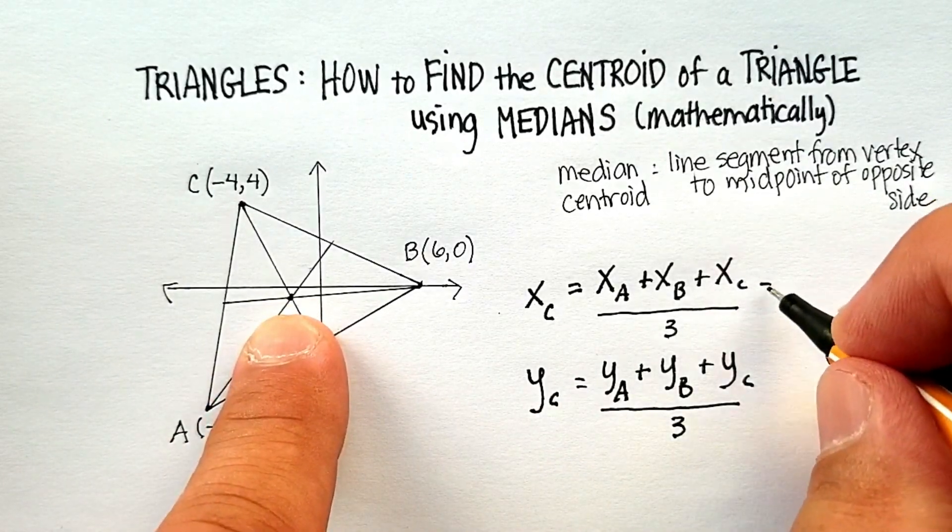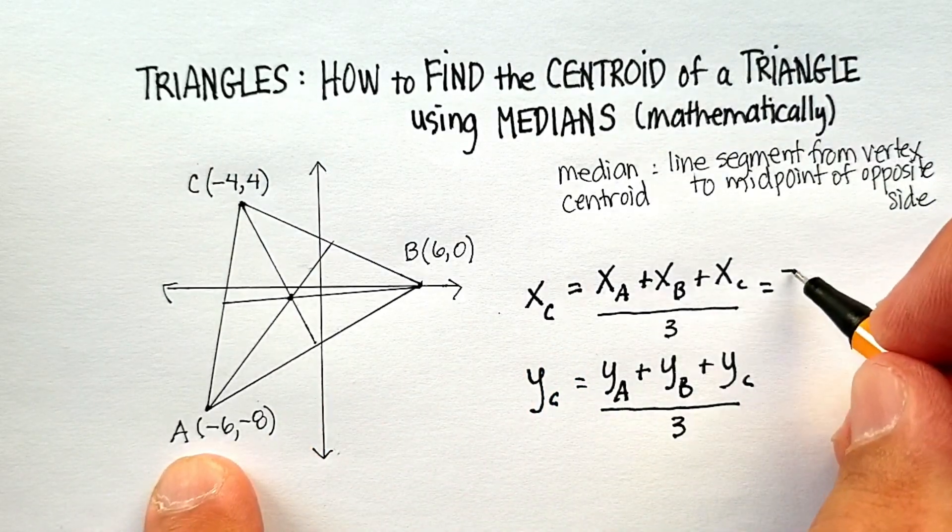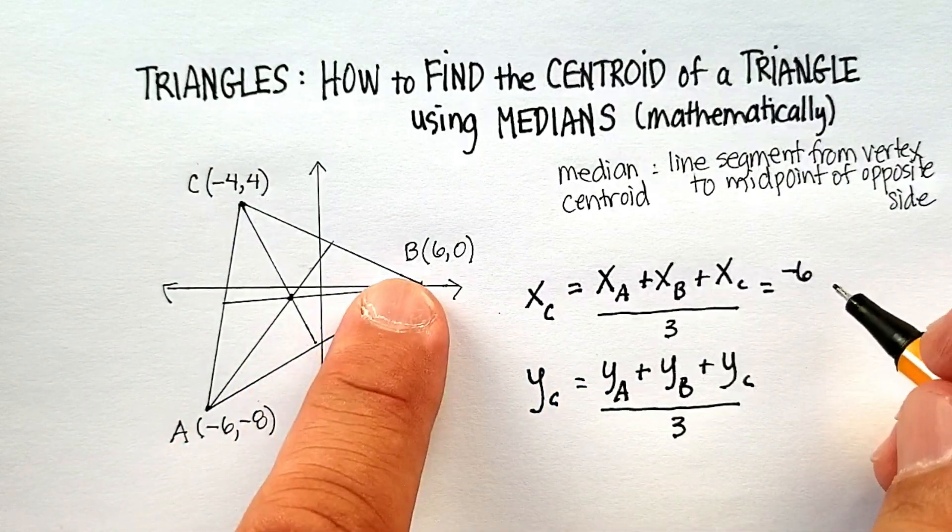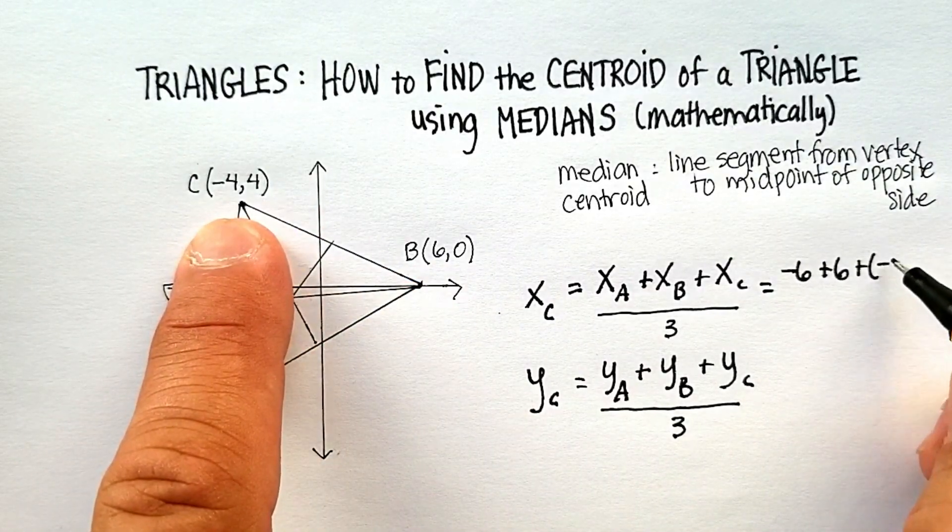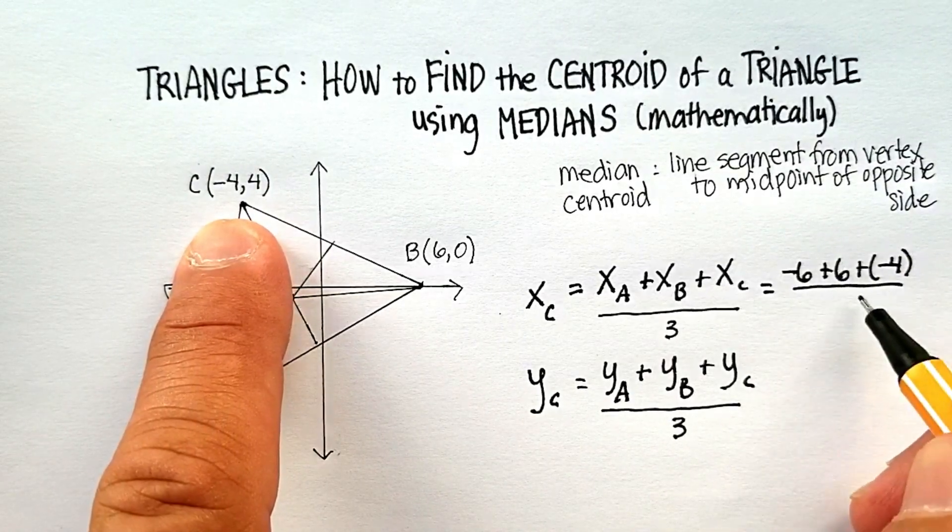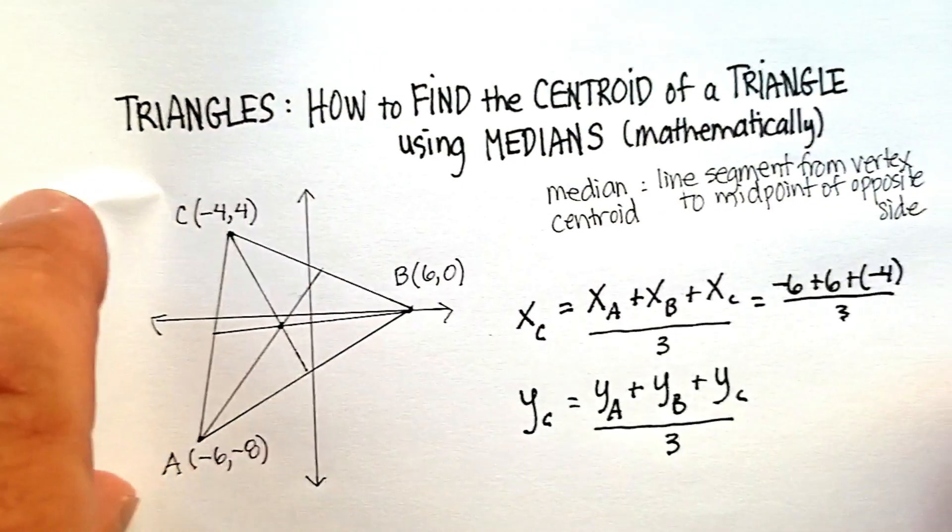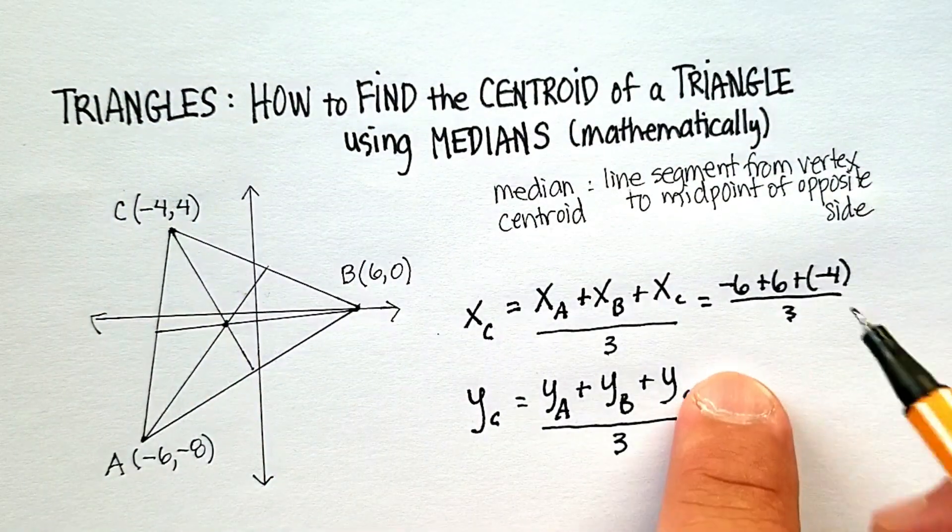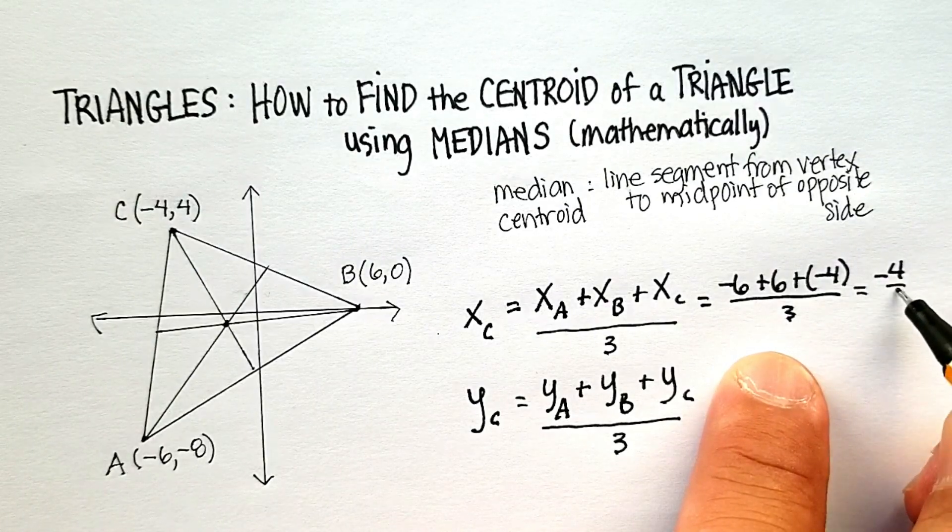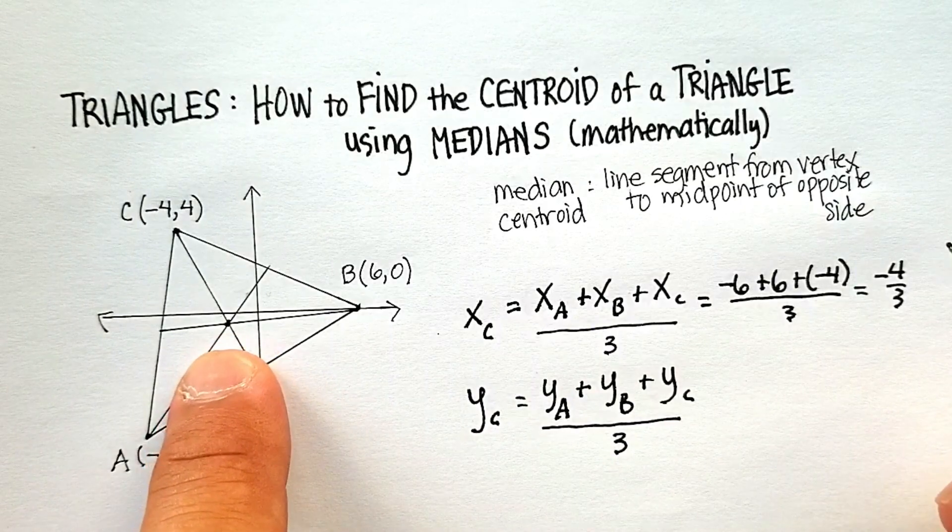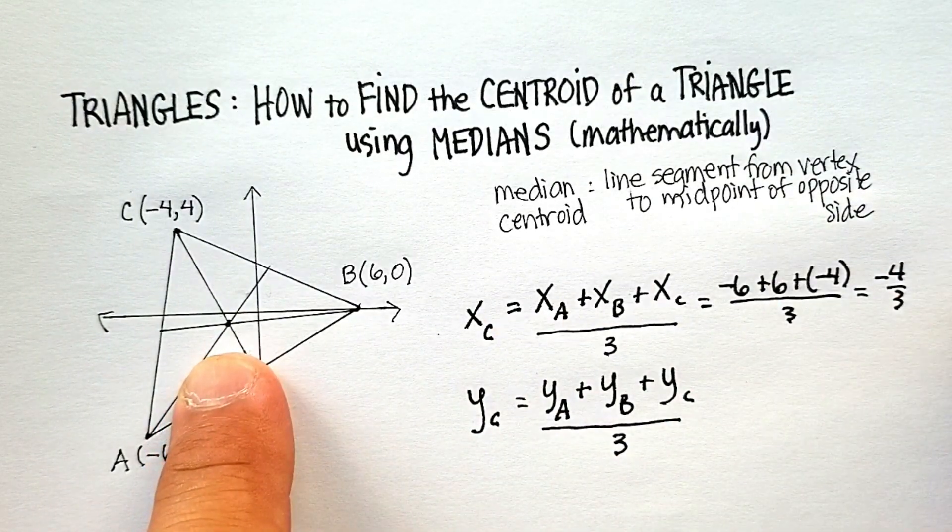x sub c would be equal to negative 6, plus a positive 6, plus a negative 4, all divided by 3. Looks like that's going to give me, negative 6 plus 6 actually just cancels, and I get negative 4 over 3. And that actually looks pretty good, like a negative 4 thirds along the x line, along the x axis. So, that looks okay.